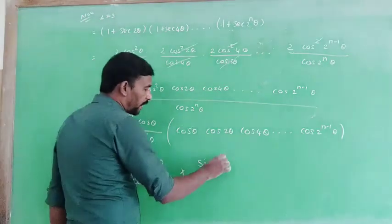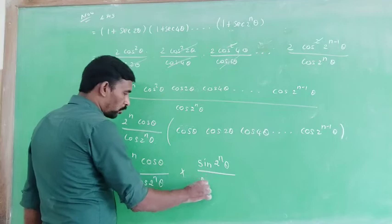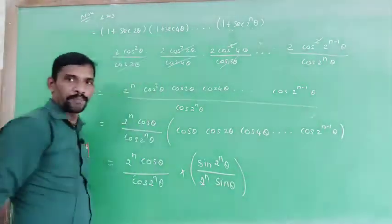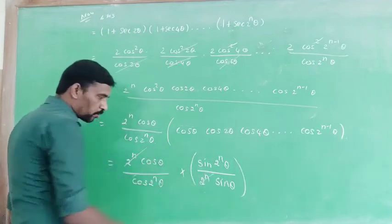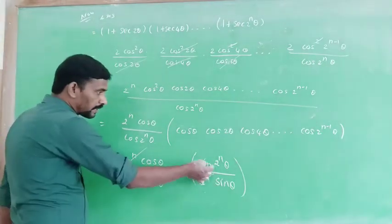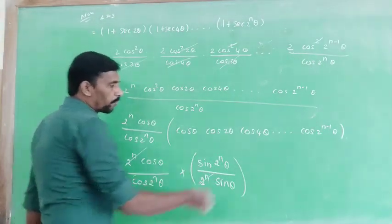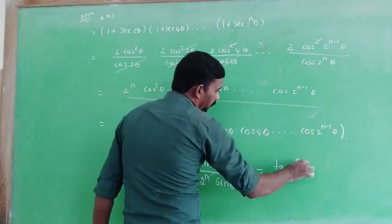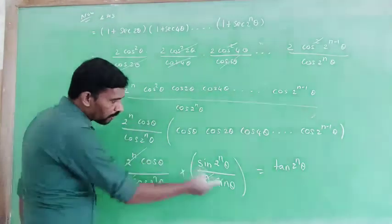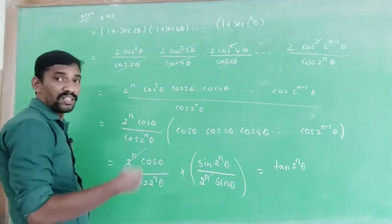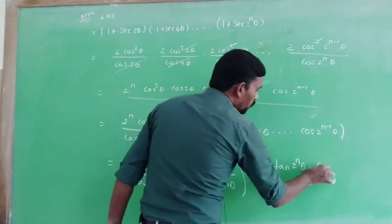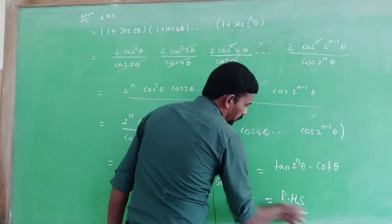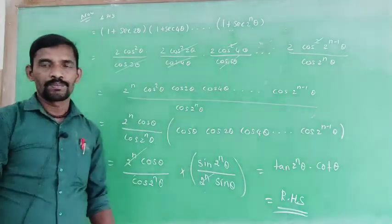This gives sin(2^n θ) divided by 2^n·sin θ. The 2^n factors cancel, and sin(2^n θ)/cos(2^n θ) equals tan(2^n θ), multiplied by cos θ/sin θ which is cot θ. So this equals RHS. Thank you.